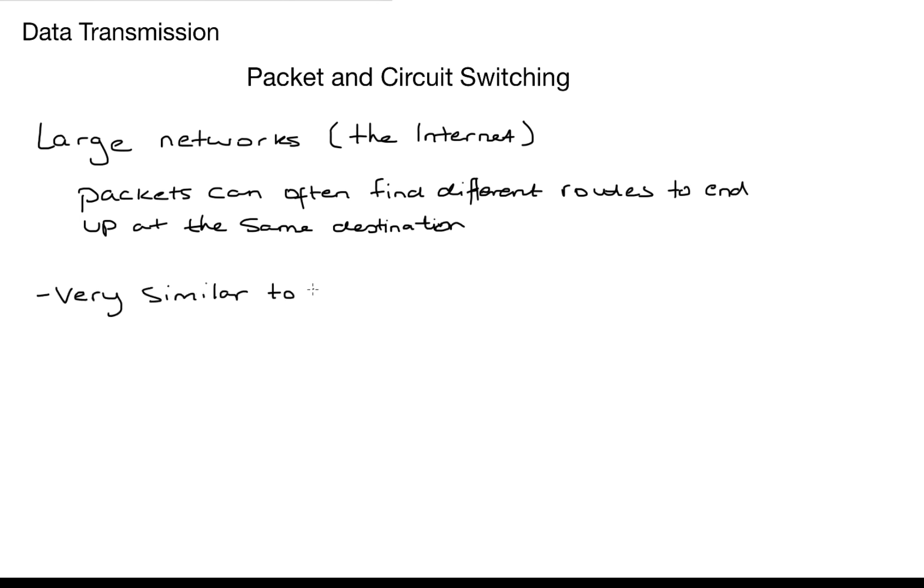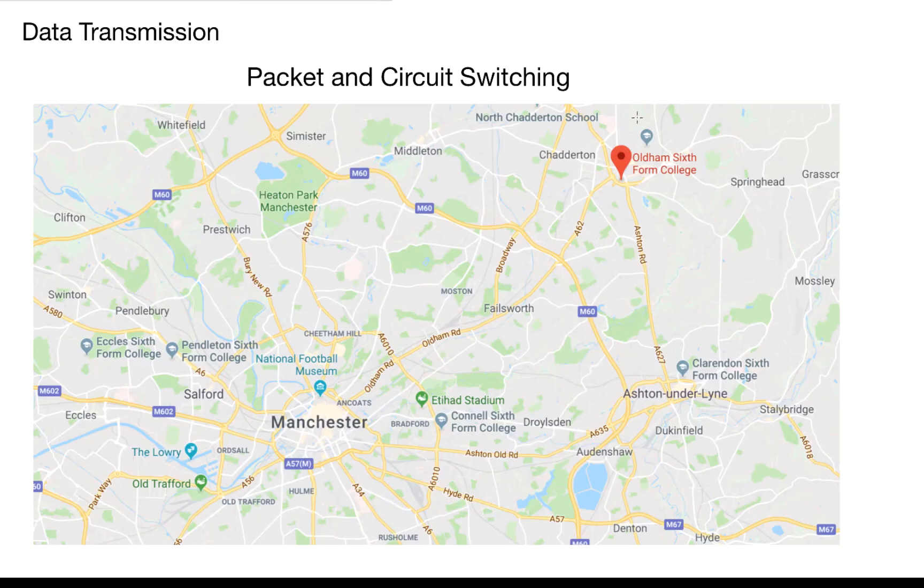And this is very similar to my route home. So the question is how do I find my way from my college to my home address? Now I could take this route here, go through Falesworth and end up at my home address which turns out is a football museum.